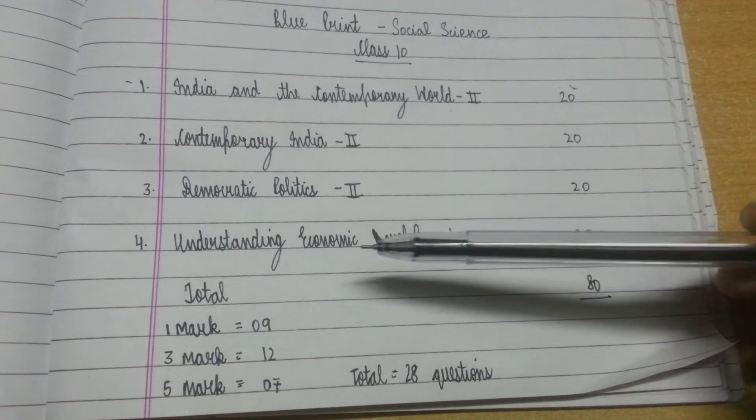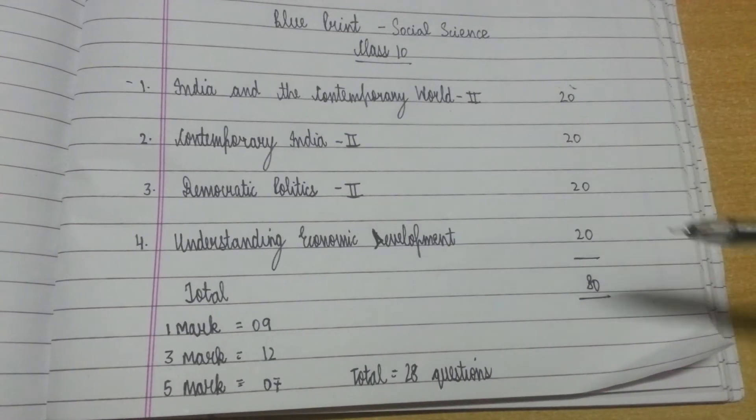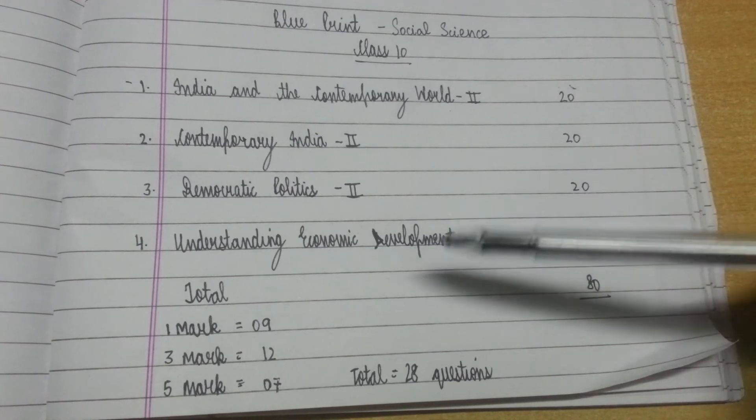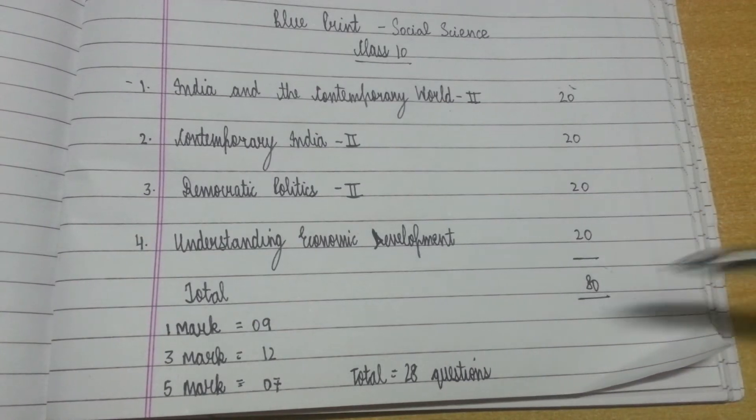Understanding Economic Development, you are going to get questions for 20 marks. The total is 80 marks and internal assessment will carry 20 marks, and the grand total will be equal to 100.